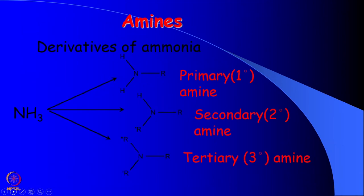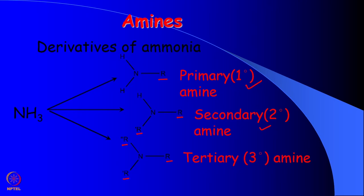We have been talking about amines and amides. Amines are derivatives of ammonia. From ammonia, if you replace one hydrogen by an alkyl group, it becomes a primary amine. Replace two hydrogens with two alkyl groups, it becomes a secondary amine. And if you replace the third hydrogen with a third alkyl group, it becomes a tertiary amine. These three different types of amines respond to different types of tests, which we will learn in a different course.